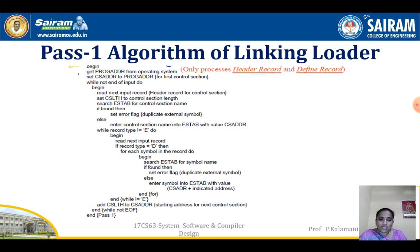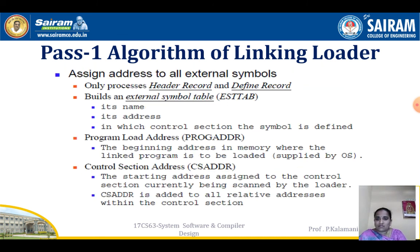So this operation is performed by the Pass 1 algorithm of the linking loader. The main tasks are assigning addresses to external symbols and constructing the external symbol table. This is the main task of the Pass 1 algorithm of a linking loader. In the next class, we are going to discuss about the role of the Pass 2 algorithm of the linking loader. Thank you.